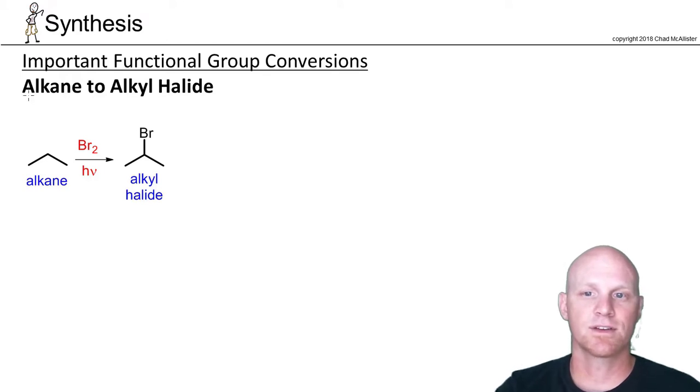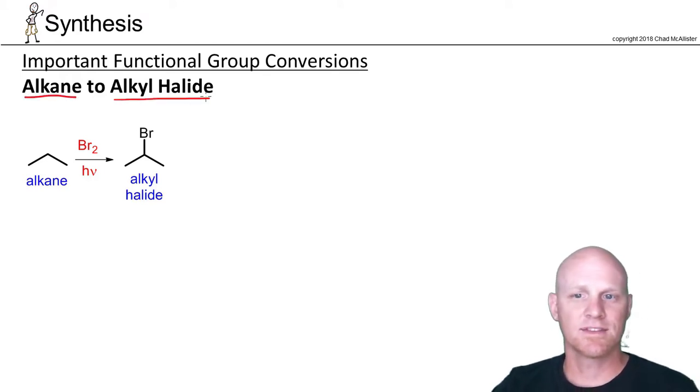The first one we're going to start with is converting an alkane into an alkyl halide. If you've got an alkane, the only thing you know how to do with it is put a leaving group on it. That's halogenation. In this case, Br2 and light, and you'll find that we use bromine way more often than chlorine.